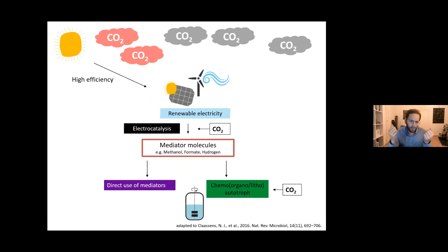A more sustainable way is to use abundant resources such as sunlight and carbon dioxide. We nowadays can turn CO2 and sunlight with high efficiency into mediator molecules such as methanol or formate. These mediators can then be used as substrates directly or as energy substrates for further microbial carbon dioxide fixation.